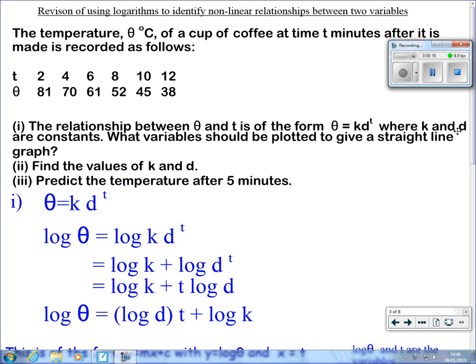It's known that the relationship is of the form θ = kd^t where k and d are constants. If we plotted θ against t we wouldn't get a straight line. What variables should be plotted to give a straight line graph?